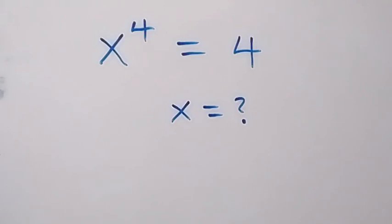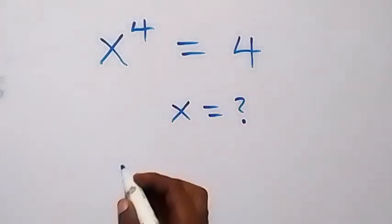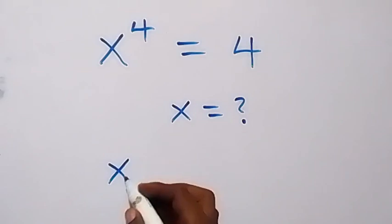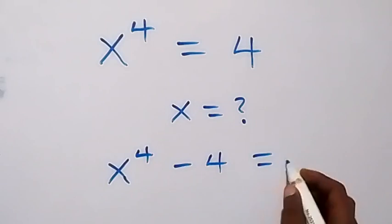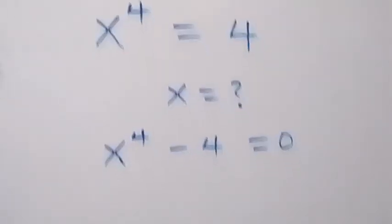Let's take 4 to this side and this becomes x raised to power 4 minus 4 equals to 0. And from here,